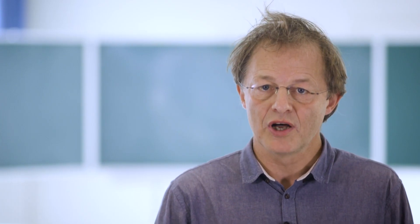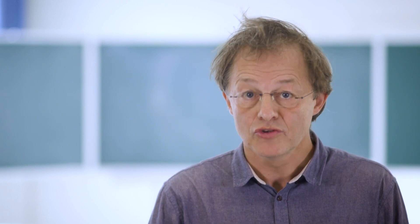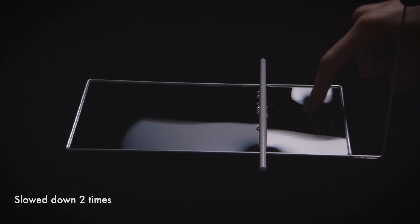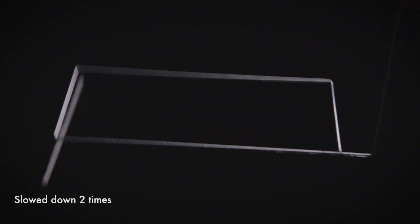A soap film is stretched on the frame and divided in two parts by the rod, which is free to move on the frame. When the soap film on the right side is ruptured, the rod moves to the left driven by the surface tension of the remaining film.